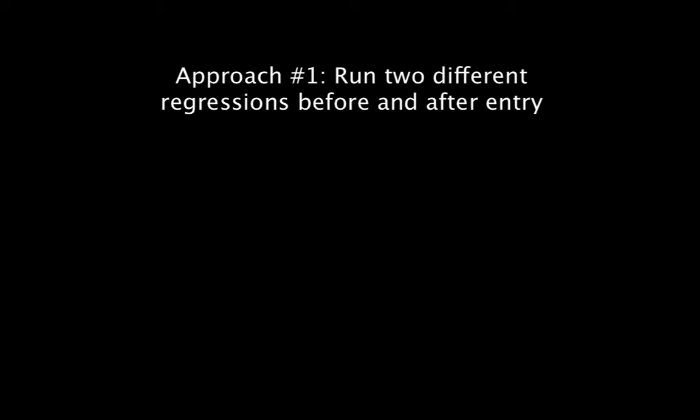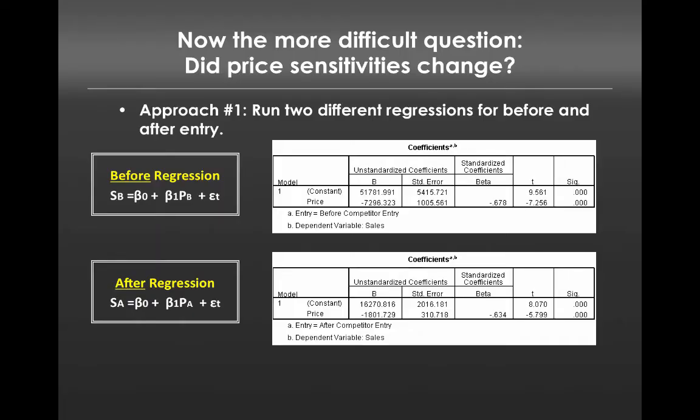One was to run two different regressions before and after entry. And when we did this, we found that, in fact, it looks like there's a difference in the response to price as a function of entry. In other words, it looks like prior to entry, we had a very large influence of price on sales, negative $7,200. And after entry, we had a smaller influence of price on sales, negative $1,800.